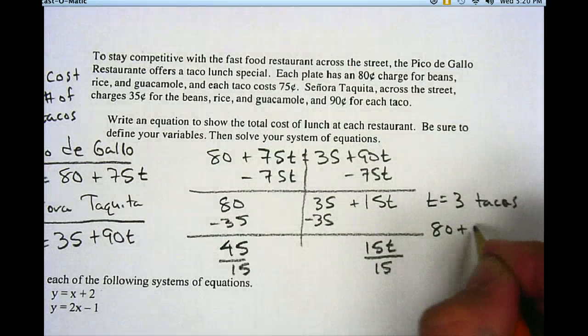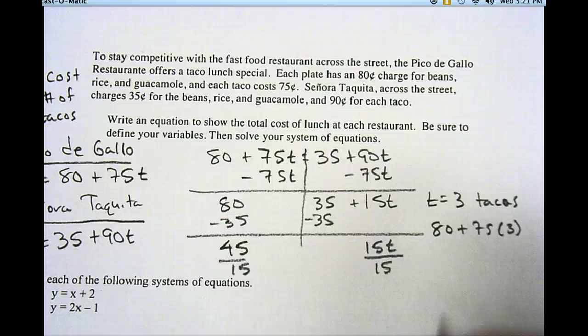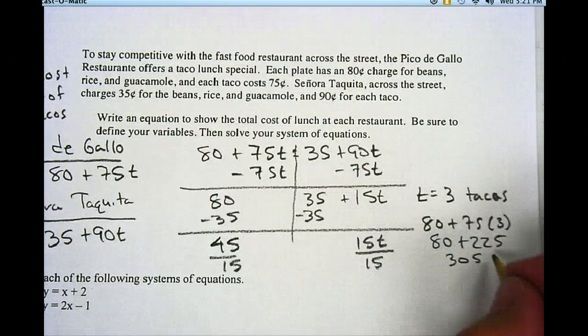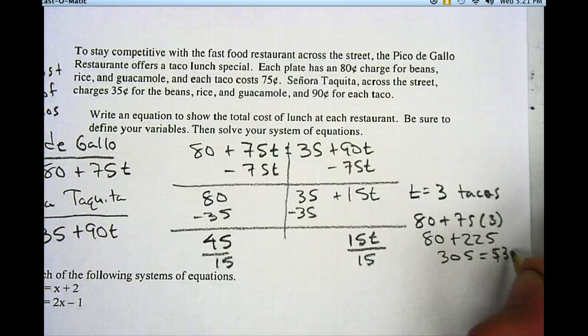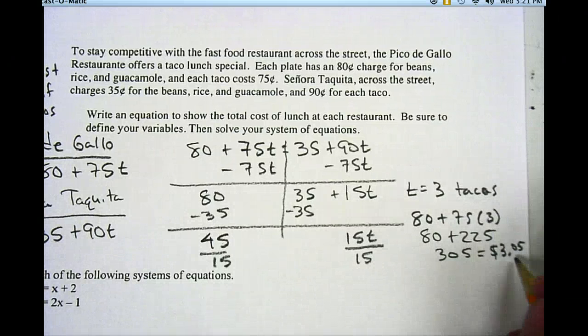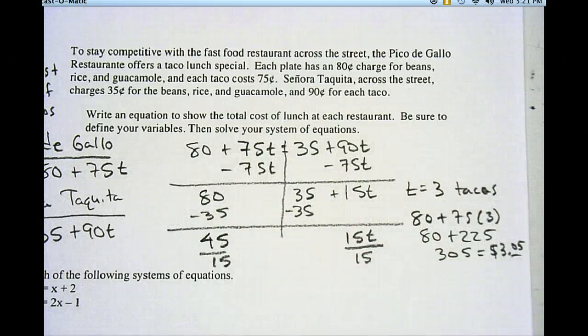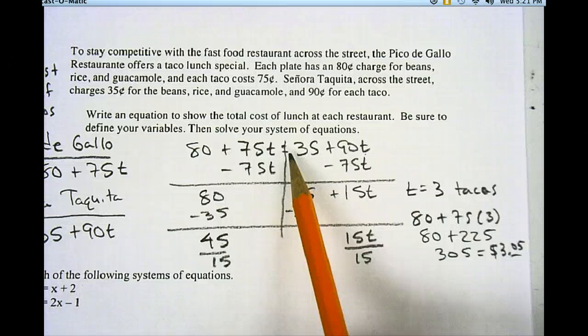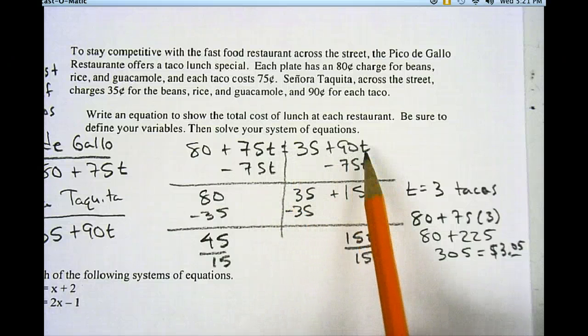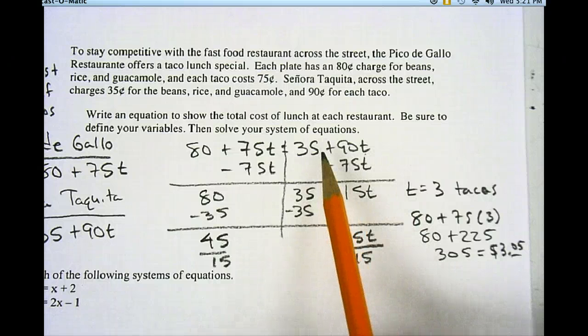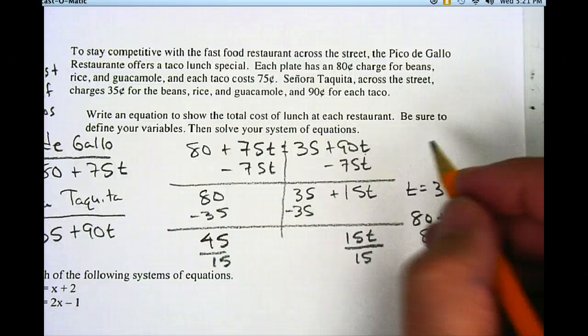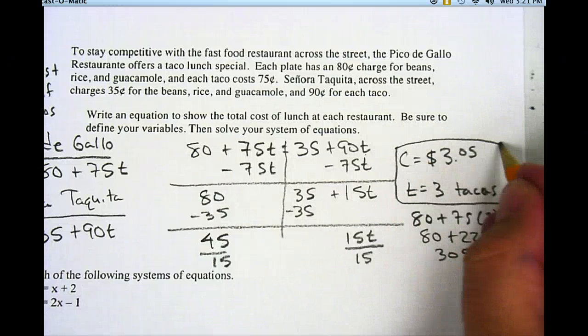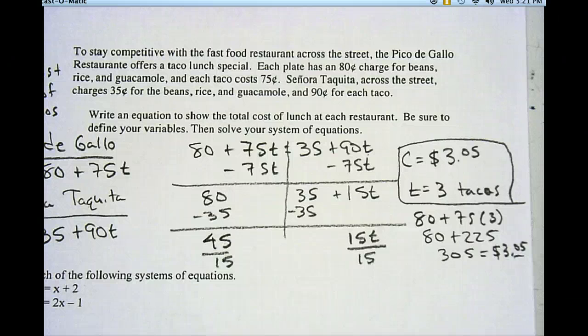So my cost is 80 cents plus 75 times 3, which is 80 cents plus 225, which is 305 cents, which is the same thing as $3.05. So I have three tacos and $3.05, and that's solving my system of equations. To double check and make sure it would work over here, if I put 3 in for t on the second equation, the 35 plus 90t, 90 times 3 is 270. 270 plus 35 is also 305. So I'm going to have a cost of 305 and three tacos. And that is my second half of my systems of equations.